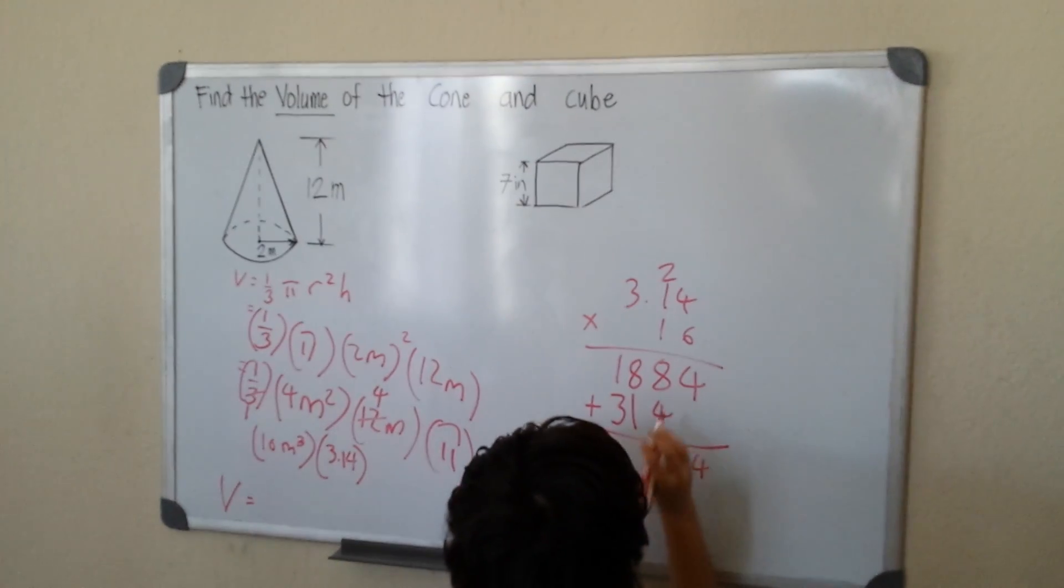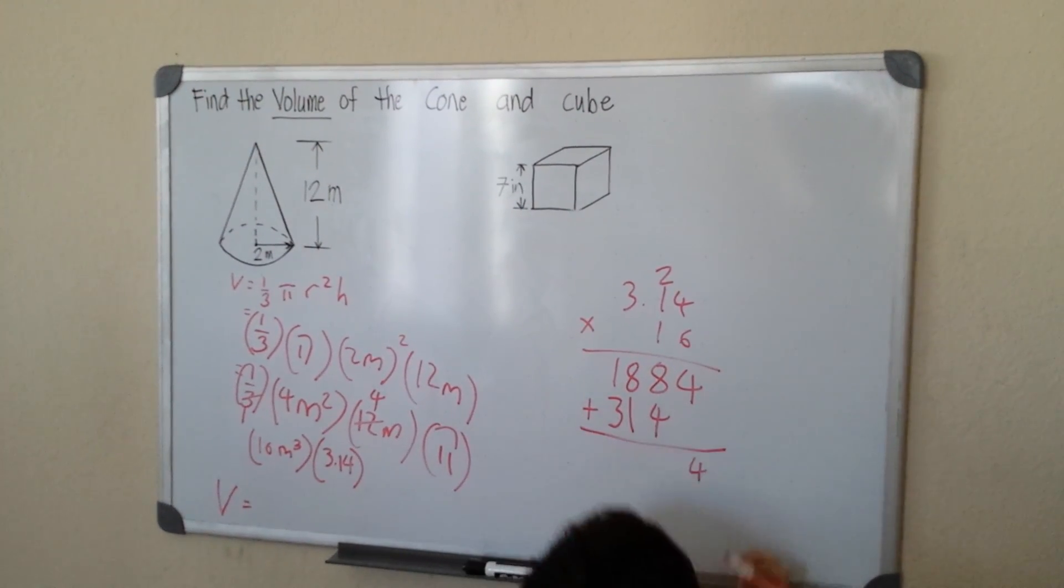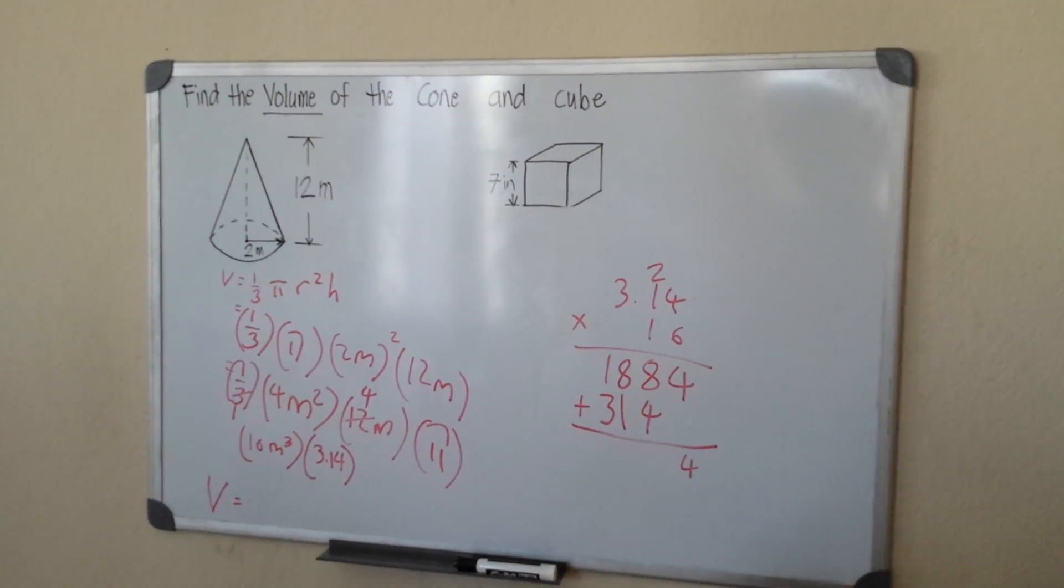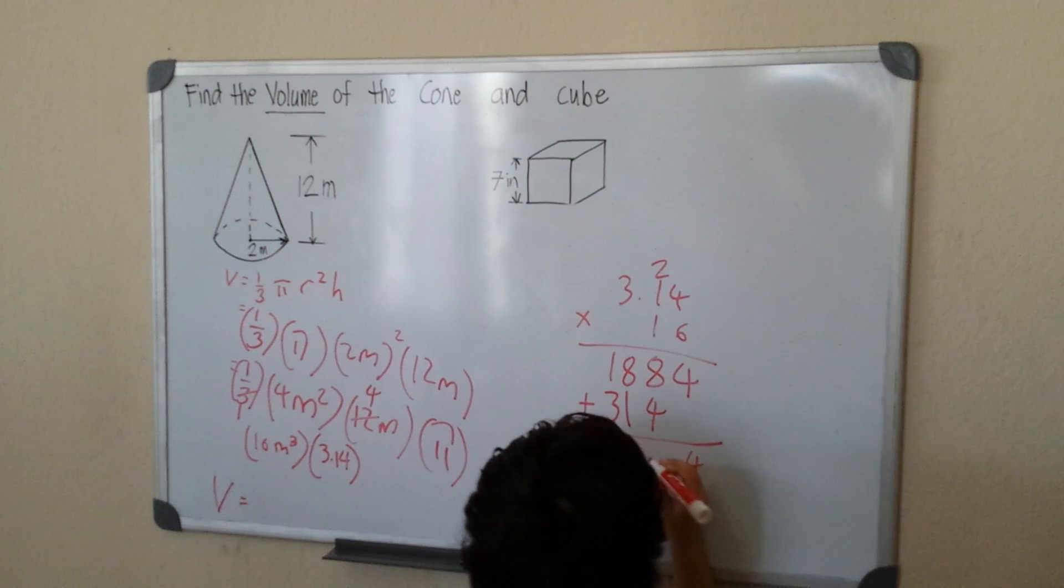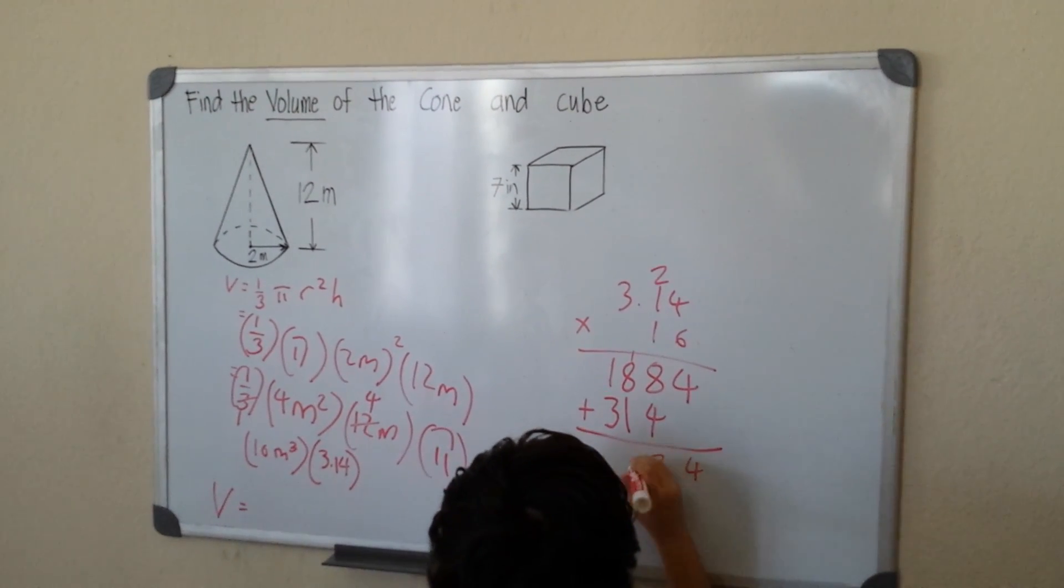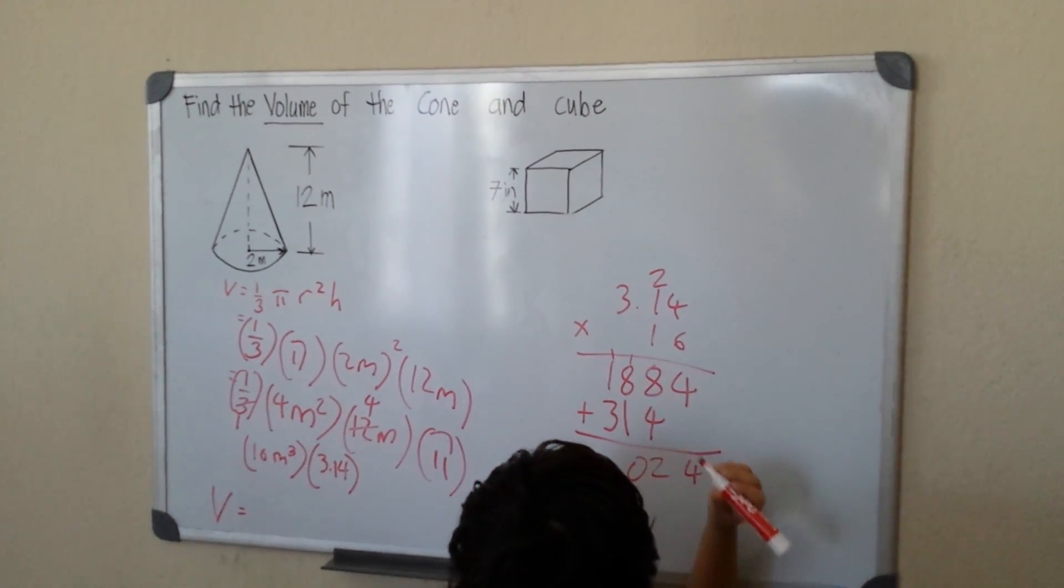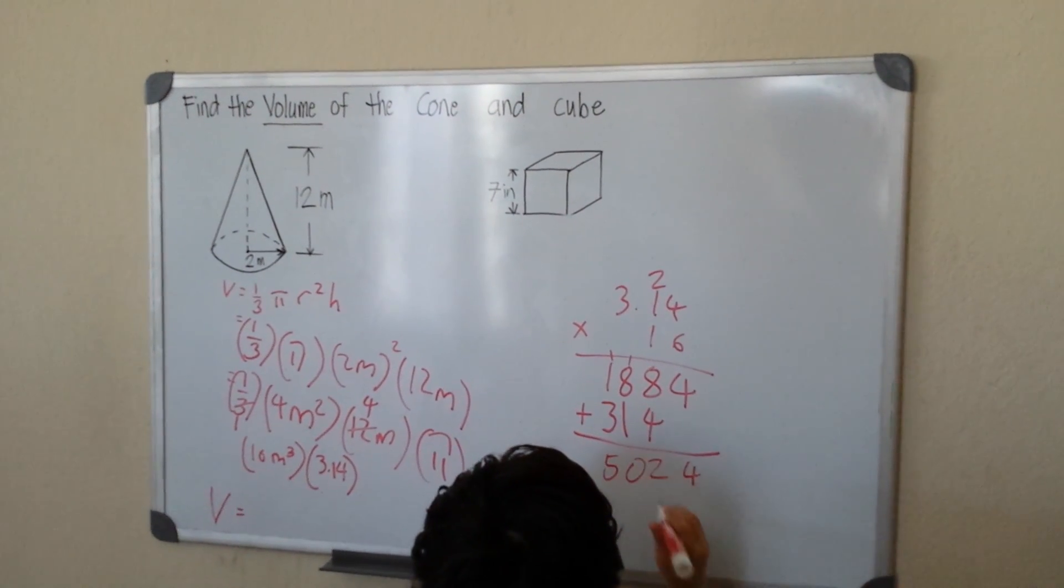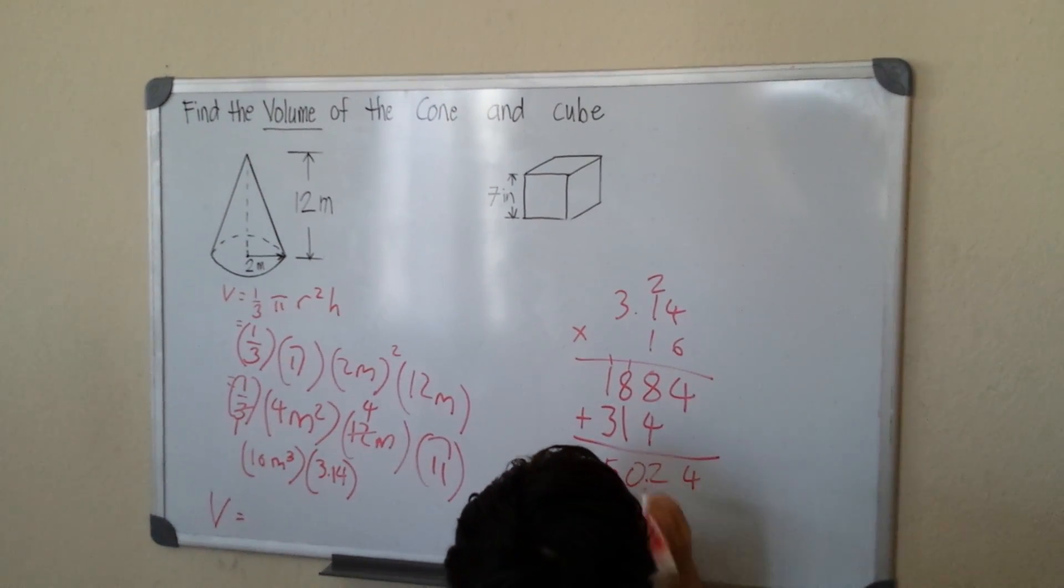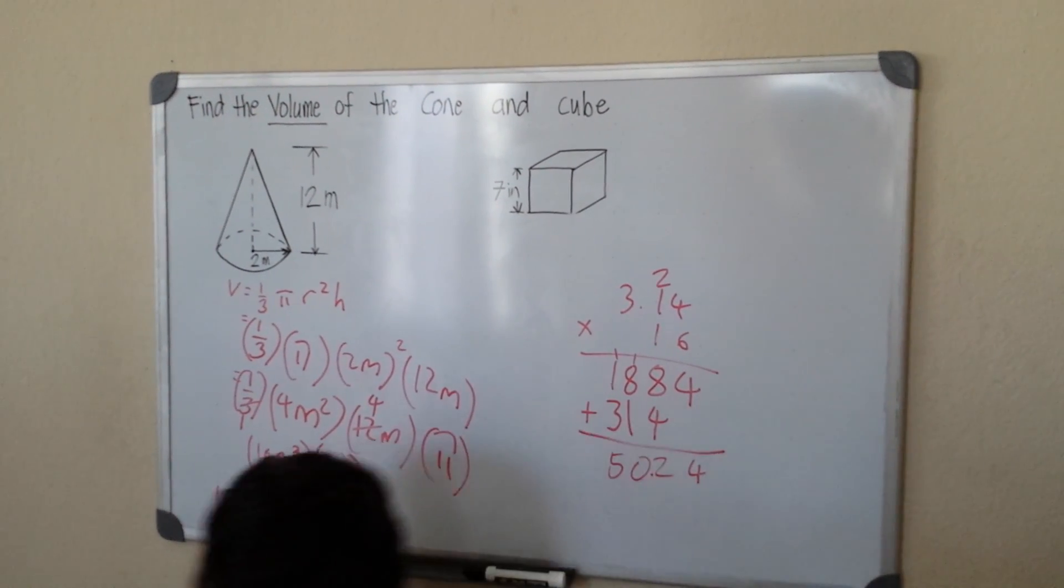We'll get 4, 8 plus 4, 12. Carry 1, 1 plus 8 is 9, plus 1 is 10, carry 1. 1 plus 1 is 2, plus 3 is 5. So 50.24.